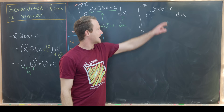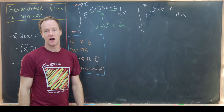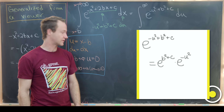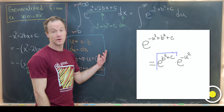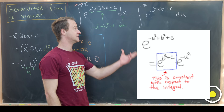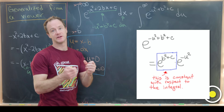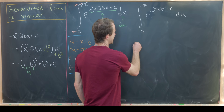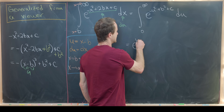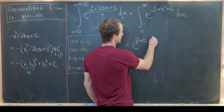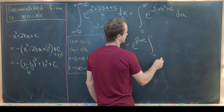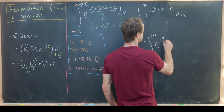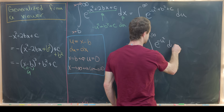Now b and c are constants, so we can pull those out of the integral. Using exponent rules, if we have addition in the exponents that means we have multiplication. So we can take out an e to the b squared plus c, and then we'll have the integral from zero to infinity of e to the minus u squared du.